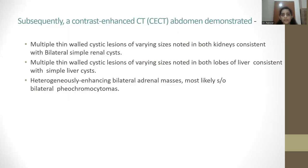Subsequently, a contrast-enhanced CT abdomen demonstrated multiple thin-walled cystic lesions of varying sizes noted in both kidneys and lobes of the liver, consistent with simple liver cysts, and heterogeneously enhancing bilateral adrenal masses, most likely suggestive of bilateral pheochromocytomas.